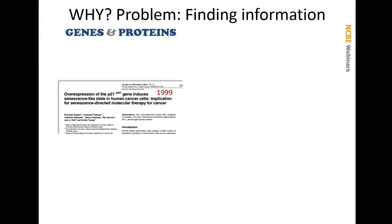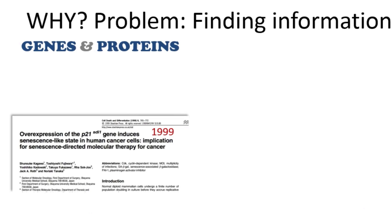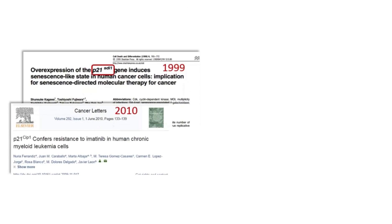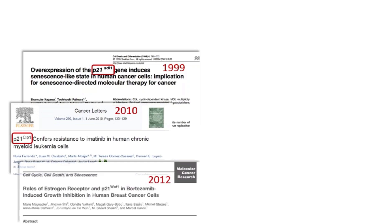A classic example of a problem with gene symbols is shown here. A paper published in 1999 described the effect of a gene product called P21SDL1 in four different cancer cell lines. In 2010, another paper described the gene P21C1 in a CML cancer cell line study. Two years later, P21Waf1 was examined for its effect with estrogen receptor alpha and six breast cancer cell lines. These genes are actually the same. There are many papers that concatenated these terms in various combinations: CIP1Waf1, WAF1SDL1, P21C1.